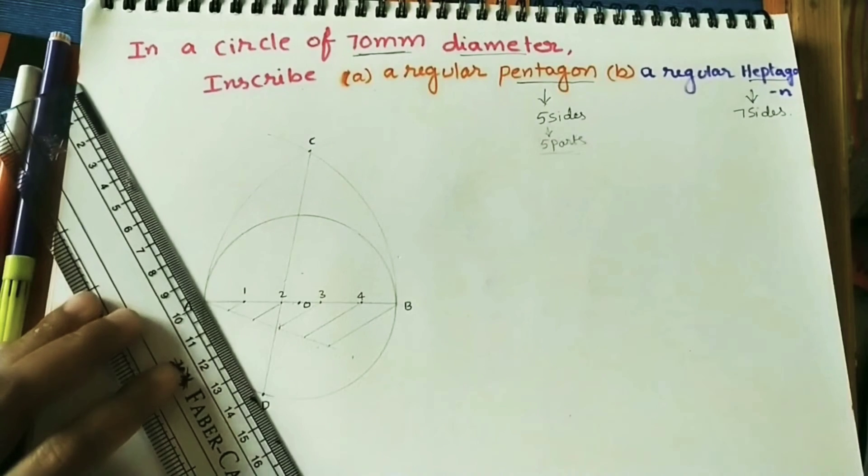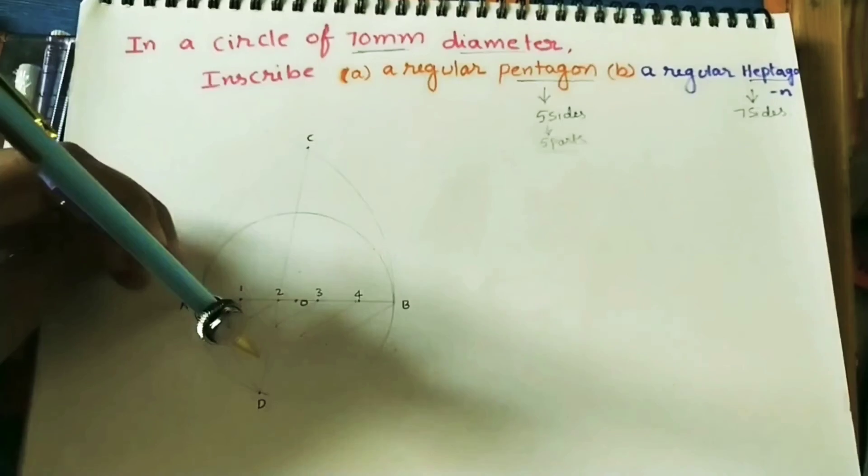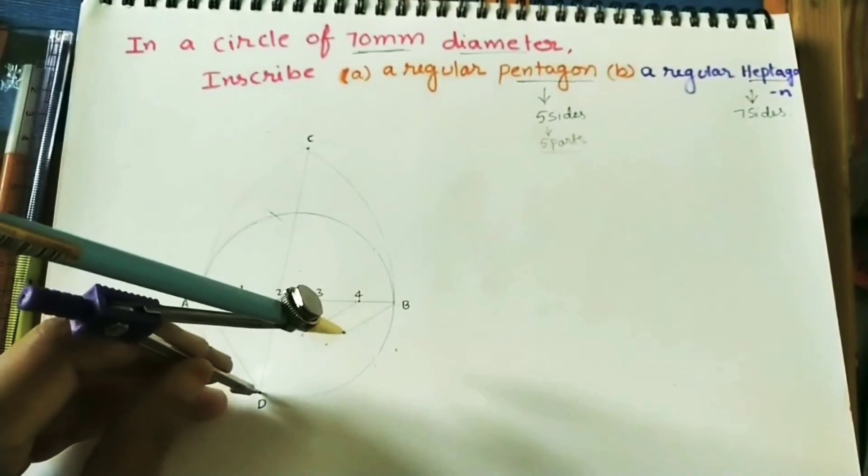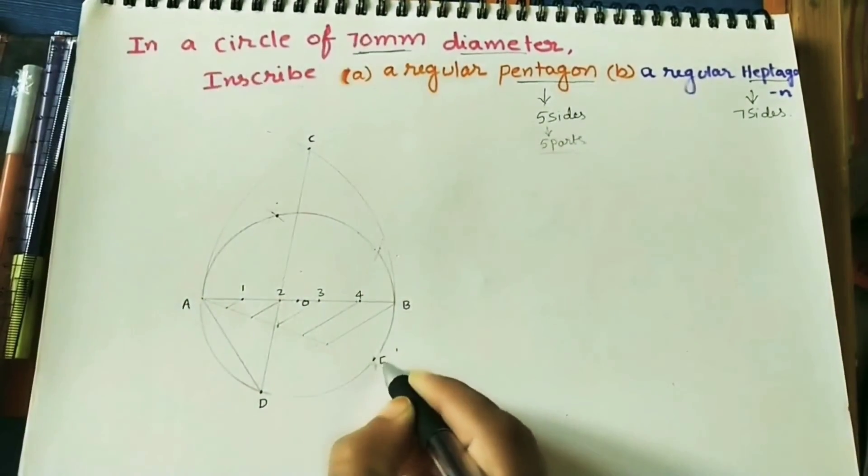If in the question, they are asking what is the side length of the polygon, you measure AD length and write it. Take the same length and divide the circle into 5 parts. Because all sides are equal length for the polygon, for pentagon or any polygon.